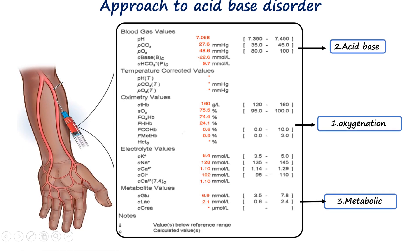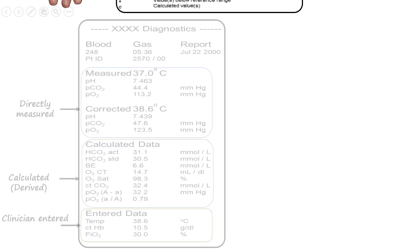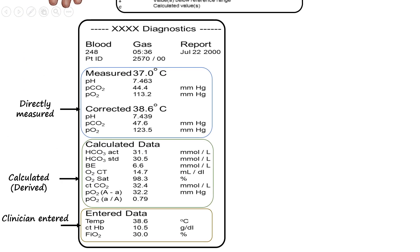An ABG reports pH, PaCO2, bicarbonate, PaO2, oxygen saturation, and a lot of other parameters that are either directly measured or calculated.